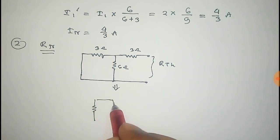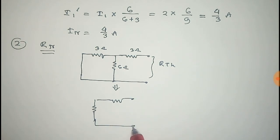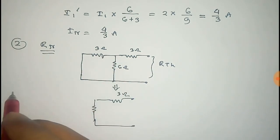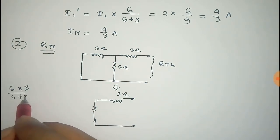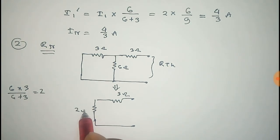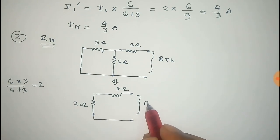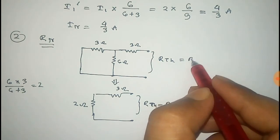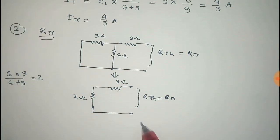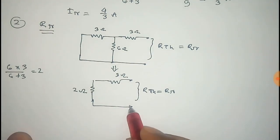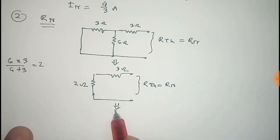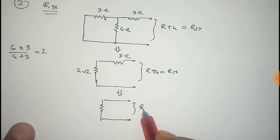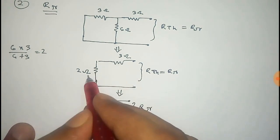The equivalent resistance of the 6 ohm and 3 ohm parallel combination is given by 6 into 3 divided by 6 plus 3, which equals 2 ohm. Now this 3 ohm and 2 ohm resistor are in series connection, so we replace them with a single resistor. That is the Thevenin or Norton resistance, and this equals 5 ohm.